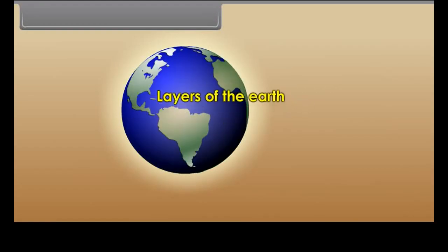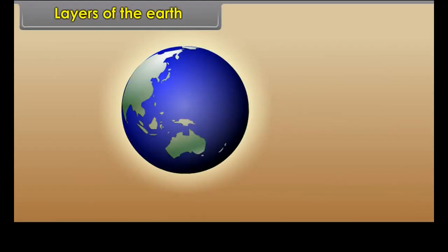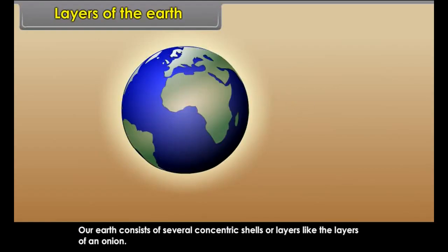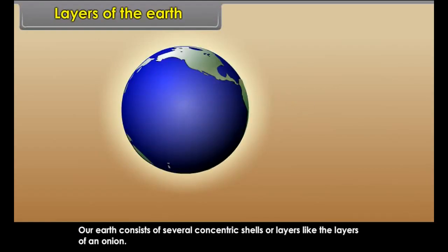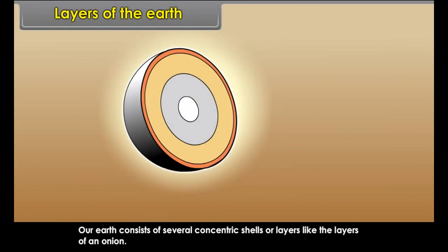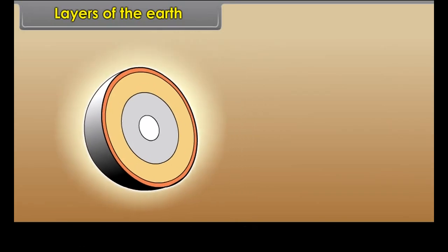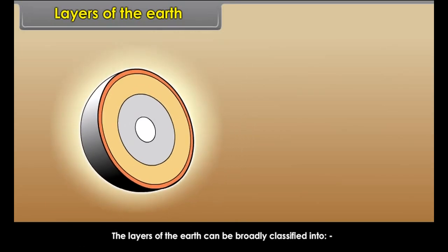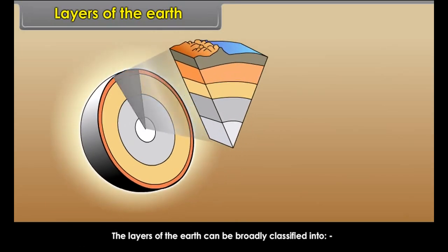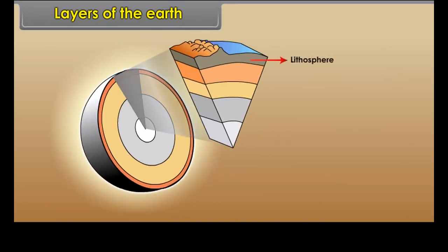Layers of the Earth. Our Earth consists of several concentric shells or layers, like the layers of an onion. The layers of the Earth can be broadly classified into lithosphere, mantle, and core.